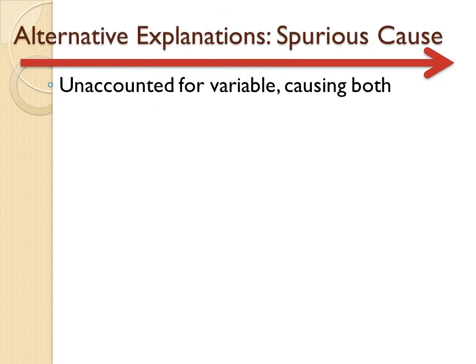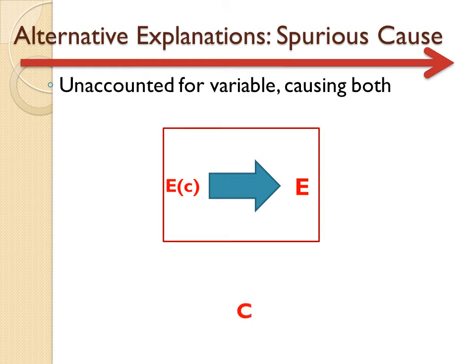Another alternative explanation is called a spurious cause. A spurious cause is an unaccounted for variable that is causing both of the factors you think are cause and effect — you've essentially identified two effects and thought of them as a cause and an effect. If you take a look at the true cause, it turns out it causes the first effect and then it causes the second effect, hiding this relationship and making it look like something it isn't.